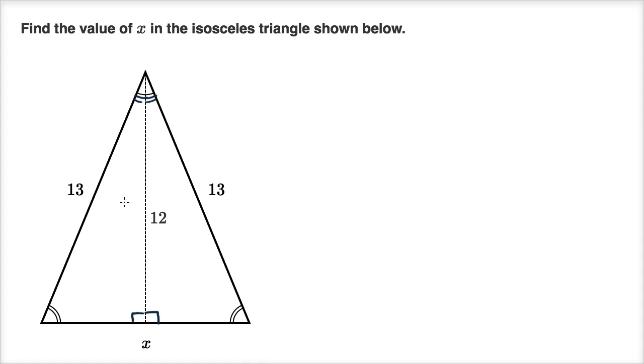And since you have two angles that are the same and you have a side between them that is the same, this side, this altitude of length 12 is on both triangles, we know that both of these triangles are congruent.